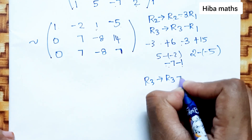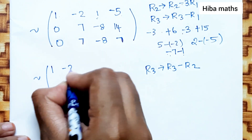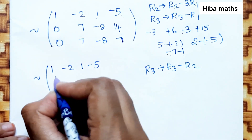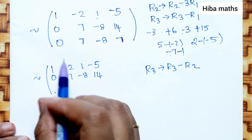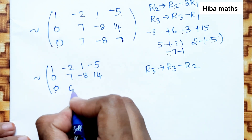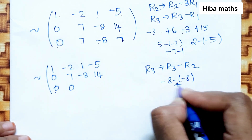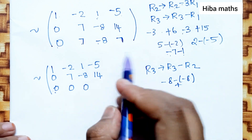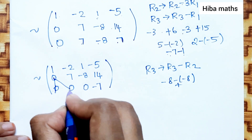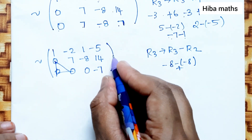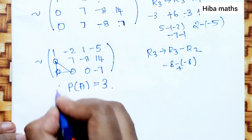R3 changes to R3 minus R2: [1, -2, 1, -5; 0, 7, -8, 14; 0, 0, 0, -7]. The echelon form has 3 non-zero rows. Therefore rank of A is 3.